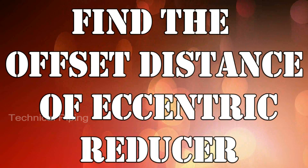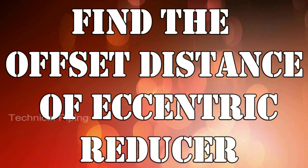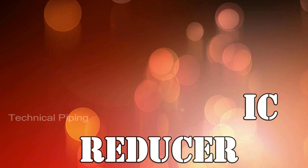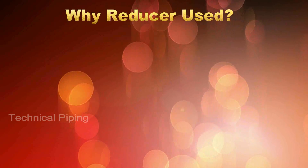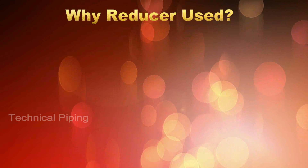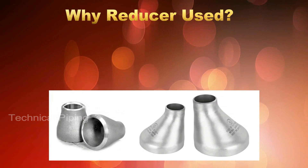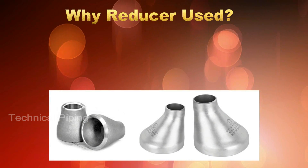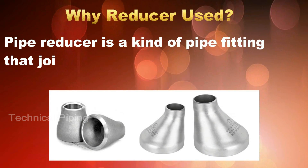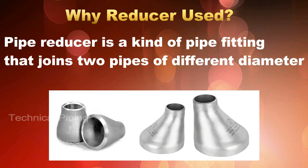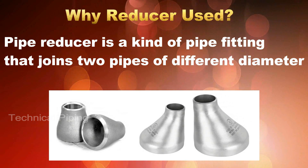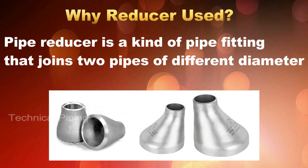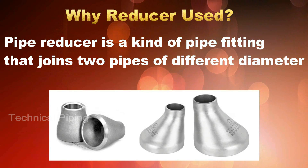In piping systems, we see reducers in some places. A pipe reducer is a kind of pipe fitting that joins two pipes of different diameters.